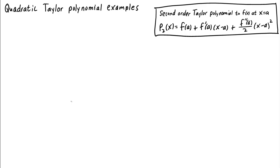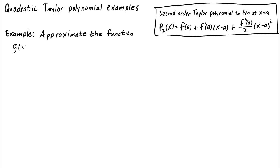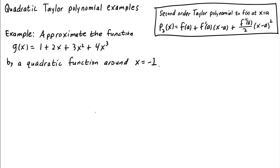Let's work out some examples of calculating second-order Taylor polynomials, or quadratic Taylor polynomials. For the first example, let's approximate the function g of x equals 1 plus 2x plus 3x squared plus 4x cubed by a quadratic function around x equals negative 1.